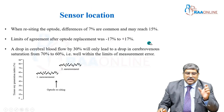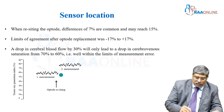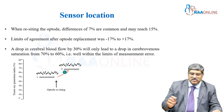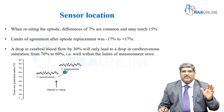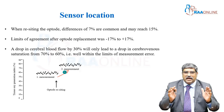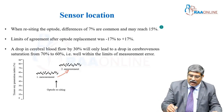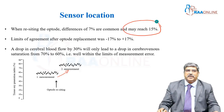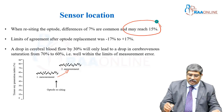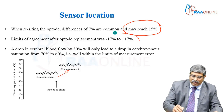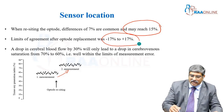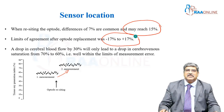When repositioning the optode, you can see a difference of 7. This can be acceptable and may reach up to 15 percent. The limit of agreement is between minus 17 to plus 17.